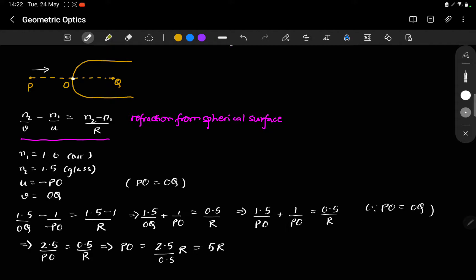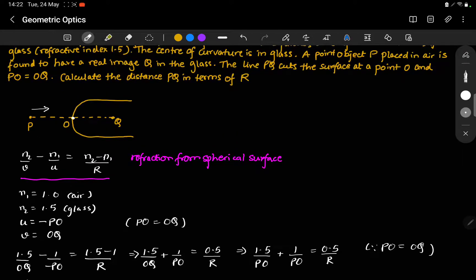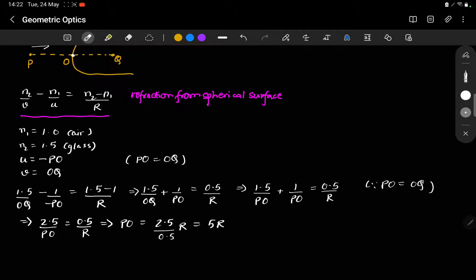So this is PO. We were supposed to find the distance PQ. So PQ is PO plus OQ. And since PO is equal to OQ, this is 2 times PO. And PO we just found out is 5 times R. So this is 10 times R.